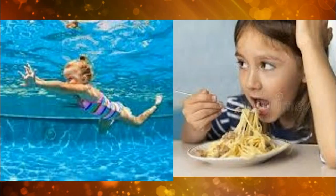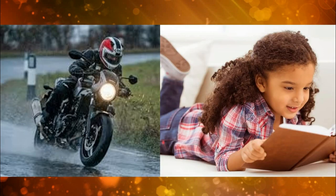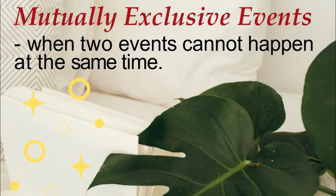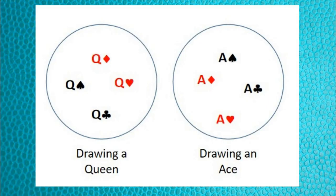Let us have these pictures. Can you perform the two actions at the same time — like diving or swimming in the pool at the same time, eating your food or driving your motorcycle at the same time as reading your book? When two events cannot happen at the same time, it is said to be mutually exclusive events.